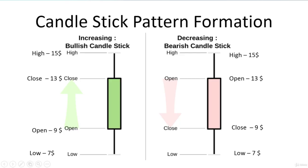Now we understand the candlestick formation by a simple example. In the green candlestick, the opening price is $9 and the closing price is $13. The highest price is $15 and the lowest price is $7. Since close ($13) is greater than open ($9), we consider it a bullish candlestick, shown in green.